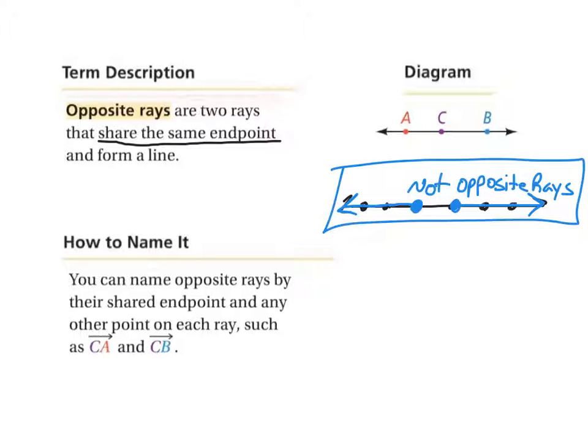Opposite rays share a common end point. So in this case, in this diagram, we have ray CA, which they talk about right down here, ray CA, and ray CB. Ray CB goes over this way. So they share the common end point C, and together they form a straight line.